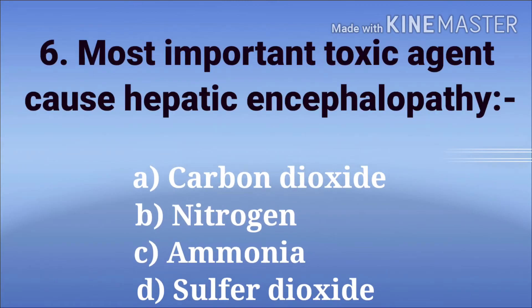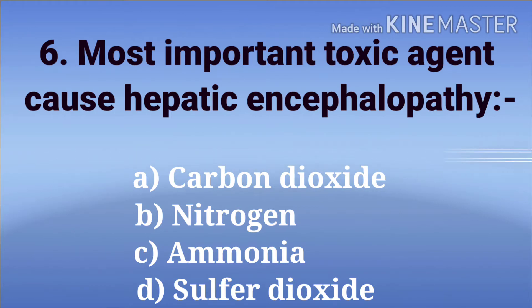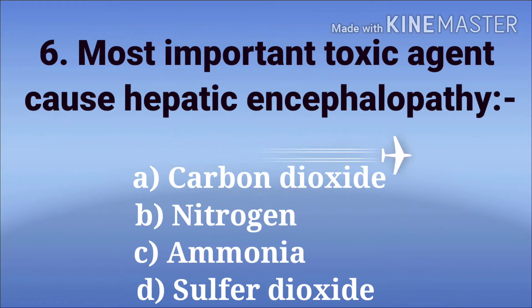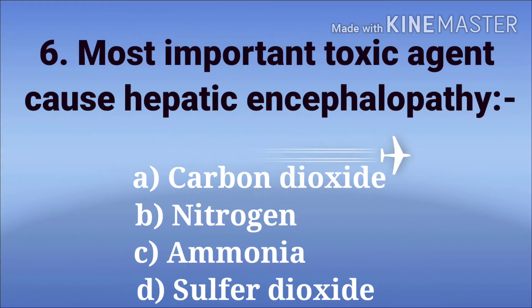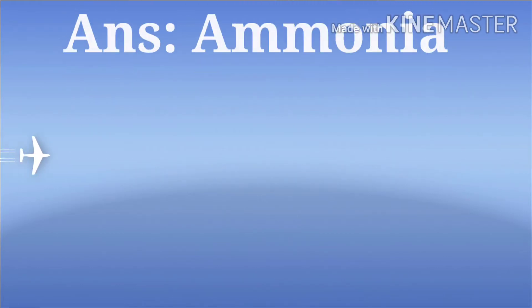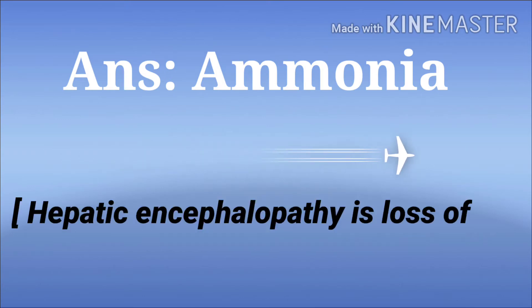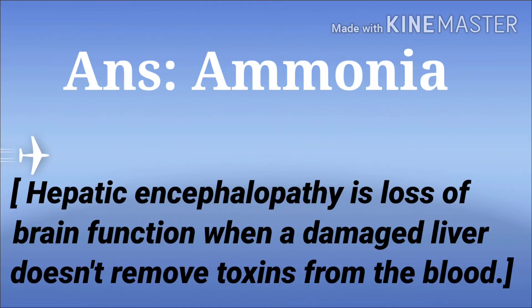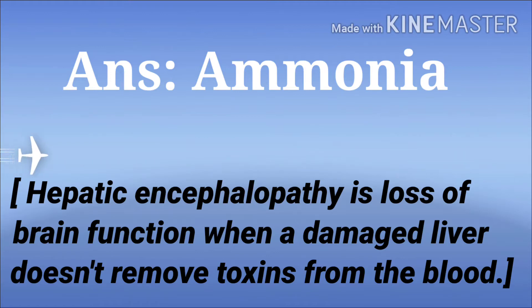Most important toxic agent causing hepatic encephalopathy. The options are carbon dioxide, nitrogen, ammonia, and sulphur dioxide. The answer is ammonia. Hepatic encephalopathy is loss of brain function when a damaged liver does not remove toxins from the blood.